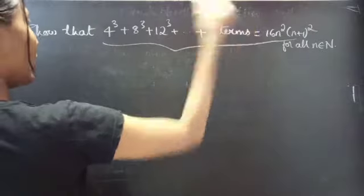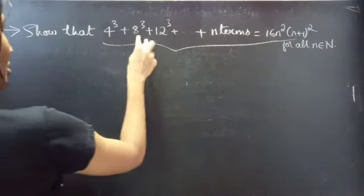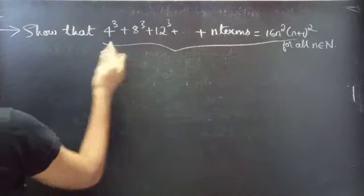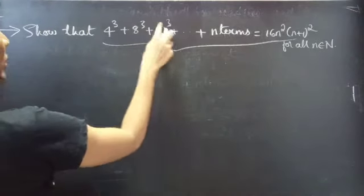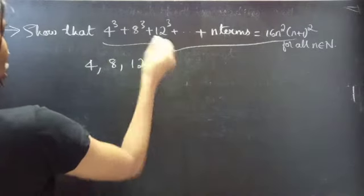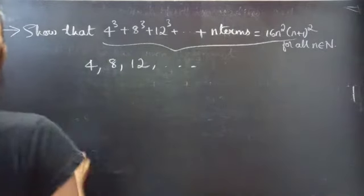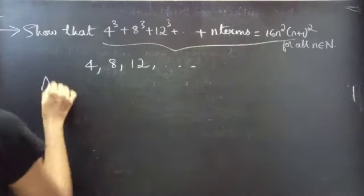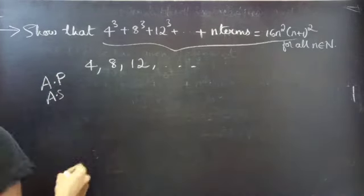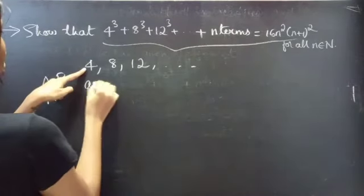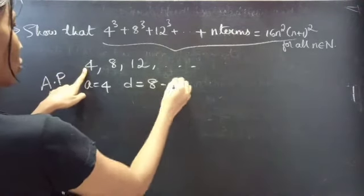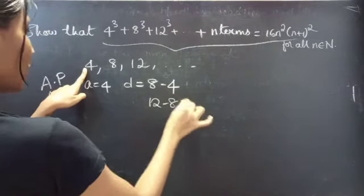So here we need to find the nth term using the first, second, and third terms. Consider the sequence 4, 8, 12, and so on. Using arithmetic progression, we have a equals 4, and the common difference d is 8 minus 4, or 12 minus 8, so d equals 4.